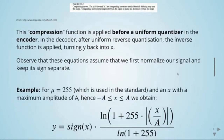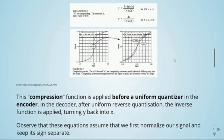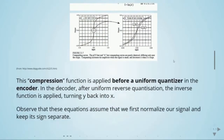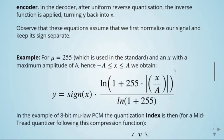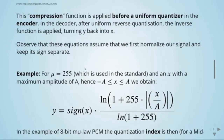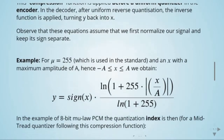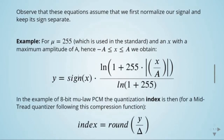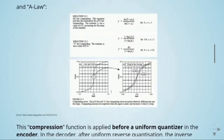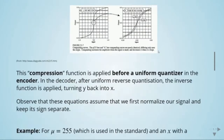Note that these equations assume we first normalize our signal and keep its sign separate. As an example, we use mu-law companding with mu equal to 255, which is the standard value. We have a signal x with maximum amplitude A, and we apply the equation keeping the sign separate when mu equals 255.